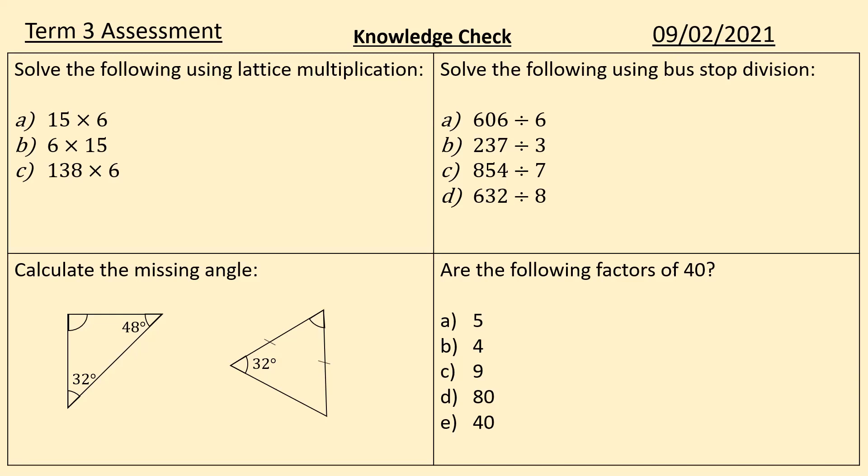Calculating missing angle in triangles, the first one we just need to find the difference from 180. The second one is an isosceles. Look at the lines, make sure you know where the two equal angles are so you know how to do that with your bar model. And are the following factors of 40? You need to use some of your divisibility tests and possibly your factor pairs to work out if each of these are indeed factors of 40. See if you can remember the definition of a factor.